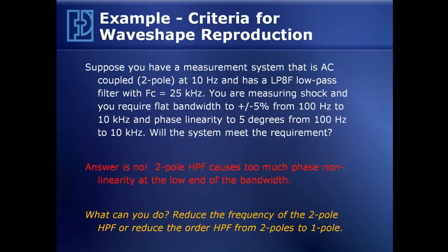What could we do? To reduce the phase non-linearity at the low end, we can reduce the frequency of the 2-pole high-pass filter if our system is programmable, or reduce the order of the high-pass filter from two poles to one pole, which reduces the phase shift at low frequencies. PFI sells programmable systems for this reason. If it's not programmable, you'll have to relax the criteria.